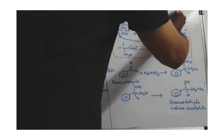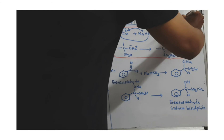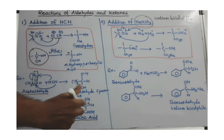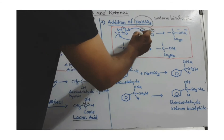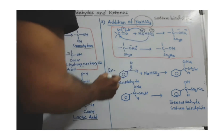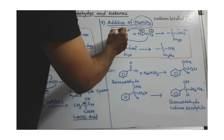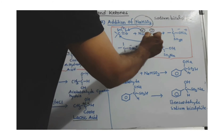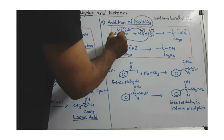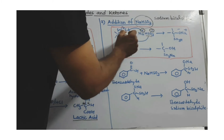Next is addition of sodium bisulfite, NaHSO3. Remember, SO3 means sulfite. Again, sodium carries a positive charge and the bisulfite portion carries a negative charge. The carbonyl carbon has a partial positive charge and oxygen has a partial negative charge. So the bisulfite portion goes and joins to the carbon, while sodium goes and joins to the oxygen.